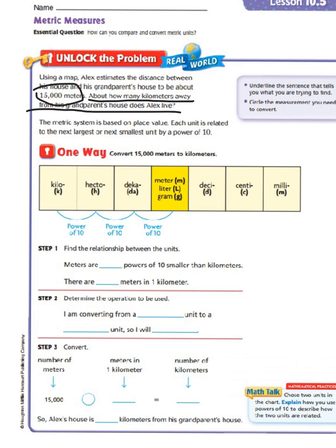The metric system is based on place value. Each unit is related to the next largest or next smallest unit by a power of 10. So we're going to look at a couple of different ways that we can do these conversions. One way is to convert 15,000 meters to kilometers.